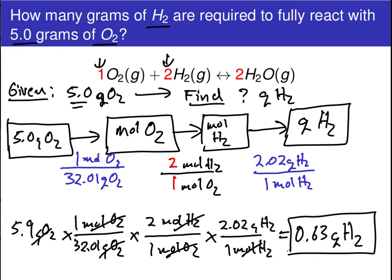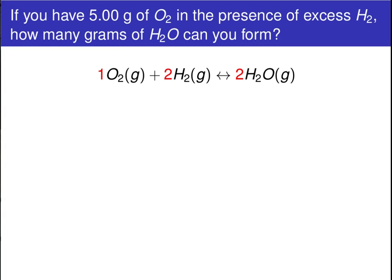So what we've determined here is that in order to fully react 5 grams of oxygen, you need 0.63 grams of hydrogen. Now let's suppose that we have the required 0.63 grams of hydrogen, and let's ask the question of how much water we can actually form in this reaction. When we say we have excess of a reagent, it means that we have at least the amount of H2 required to fully react the O2, and then some.